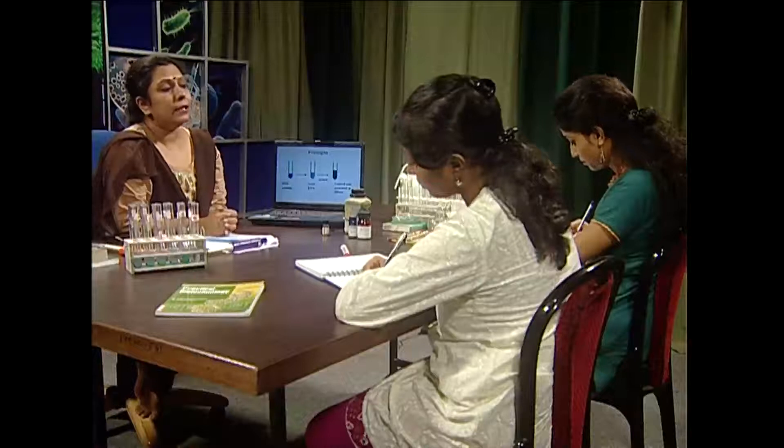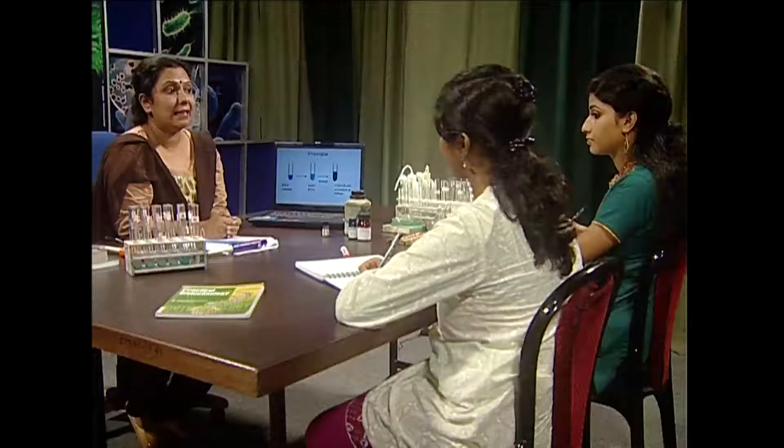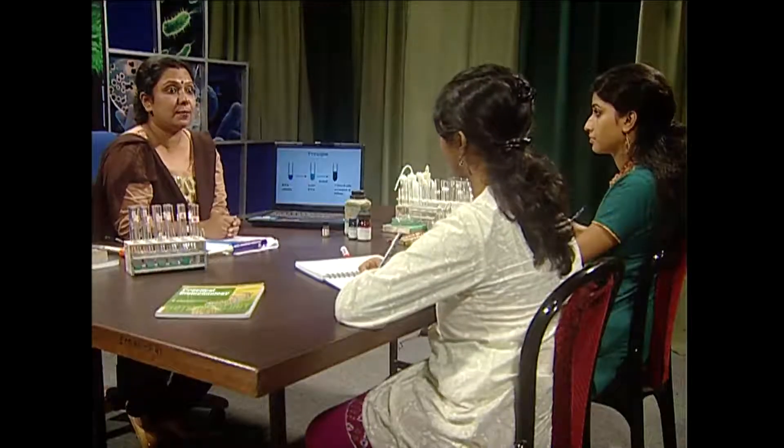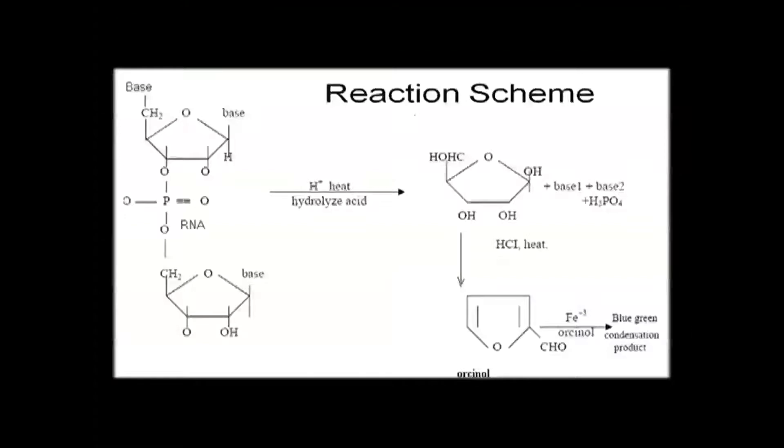Orcinol is 3,5-dihydroxytoluene. Interestingly, Orcinol can also react with deoxyribose sugar, but it produces hydroxymethyl furfural derivative, which produces yellow-brown coloration — not green coloration. That is a very interesting point. This is the reaction scheme: acid hydrolysis with heat, using ribose sugar, Orcinol, and furfural derivative as key players.